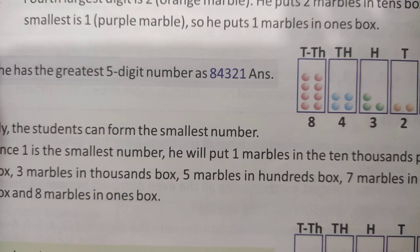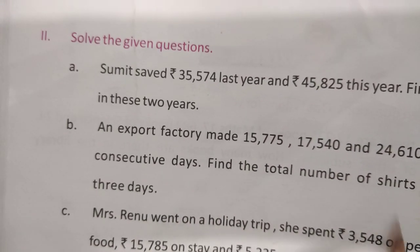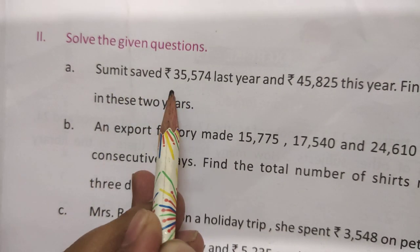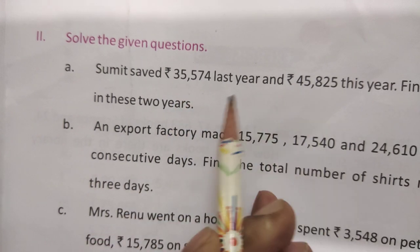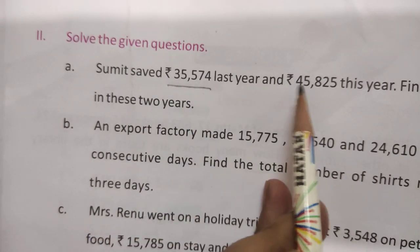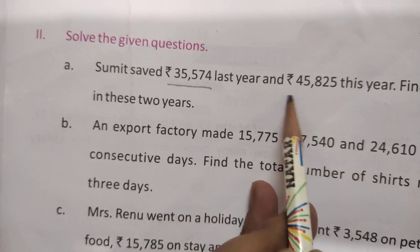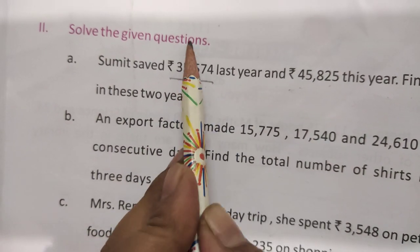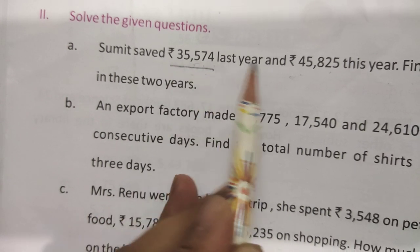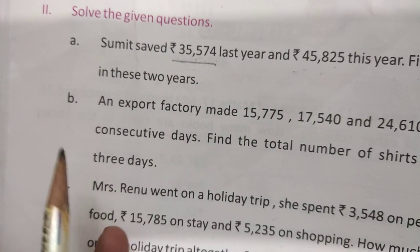Change to your next space. Now solve the given questions. A: Sumit saved 35,574 last year and 45,825 this year. Find the total saving. Add these numbers — set the positions correctly for ones, tens, hundreds, thousands — and add to get the total answer.